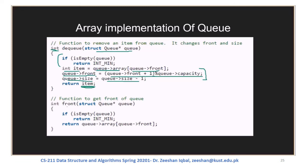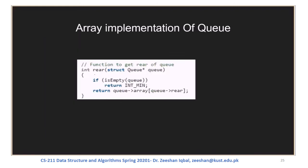There is another function, front, which retrieves the element at the front of the queue. It first checks if the queue is empty; if so, it returns INT_MIN. Otherwise, it returns the element at the front index. Similarly, there is a function rear which checks if the queue is empty; if empty, it returns INT_MIN. Otherwise, it returns the element at index rear, which is the element at the back of the queue.